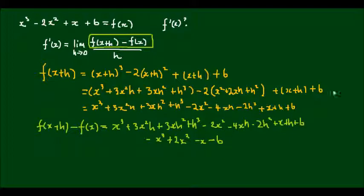Now I have an expression I can simplify a little bit, so here the positive 6 and the negative 6 will cancel out, the positive x and the negative x will cancel out, the negative 2x squared will cancel out with the positive 2x squared, and the negative x cubed will cancel out with the positive x cubed. So that leaves me with 3x squared h plus 3xh squared plus h cubed minus 4xh minus 2h squared plus h.